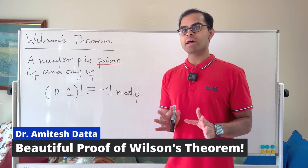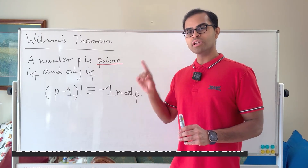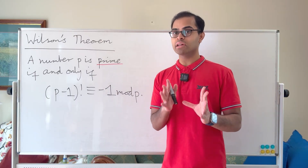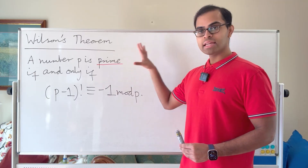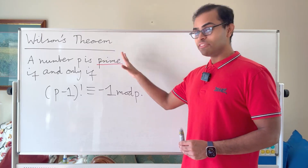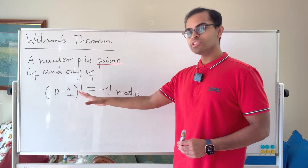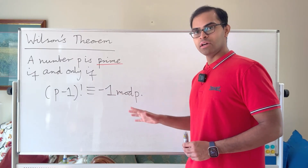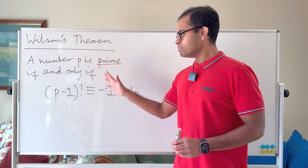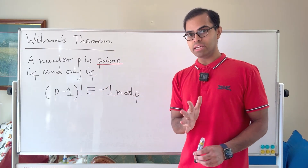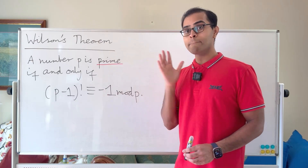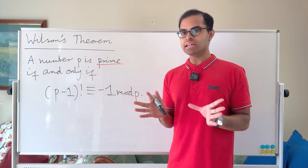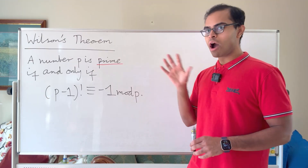Wilson's theorem is a beautiful theorem in number theory and it's so elegant. We're going to state and prove it and understand a lot of fun number theory along the way. The statement is that a number p is prime if and only if (p-1)! is congruent to -1 modulo p, which is to say that when you divide (p-1)! by p, the remainder is going to be p-1. That's what the theorem is saying and it's a very elegant result, but why is it true and how do we understand it?